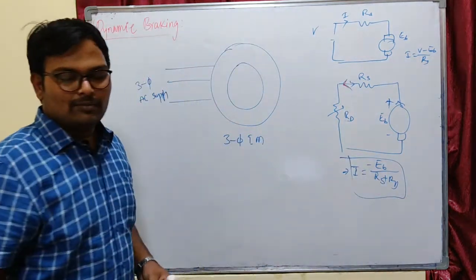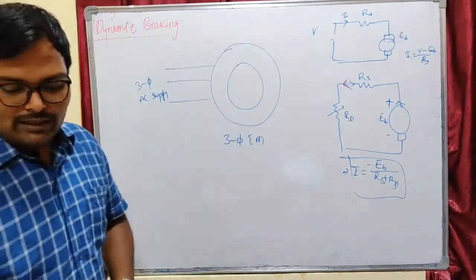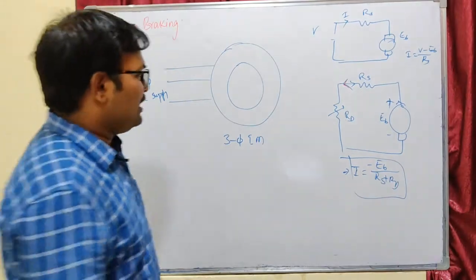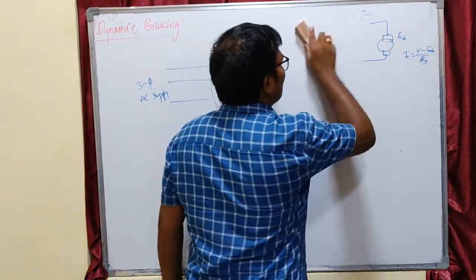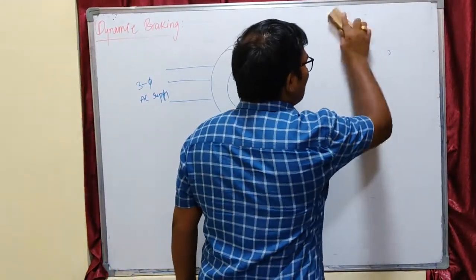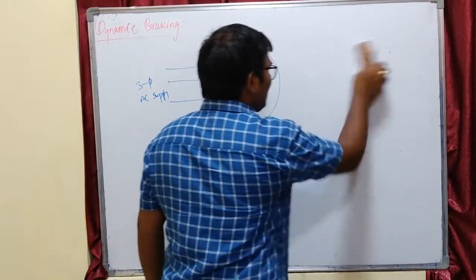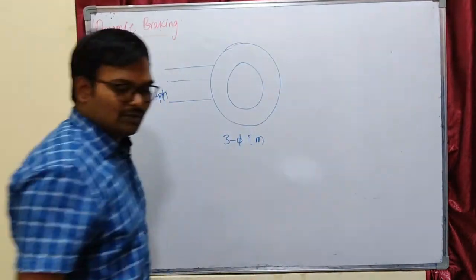As current changes, the speed of the machine will also try to reverse. At the point where speed is zero, we disconnect it. This is about dynamic braking in DC machines.